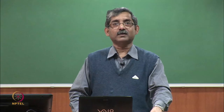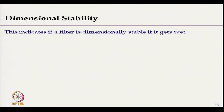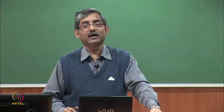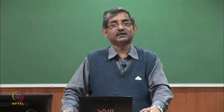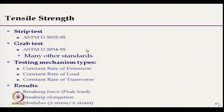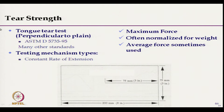After pore size assessment, dimensional stability must be evaluated — whether there is a change in dimension during application, wetting, or heating. Tensile strength characteristics are also required. Strip test and grab test are the available tests, with results including breaking force, breaking extension, and modulus. These are important for understanding handling of filter fabric. Tear strength is also important — tongue tear strength can be measured using a constant rate of extension machine, with maximum force and average force of tear strength used as parameters.